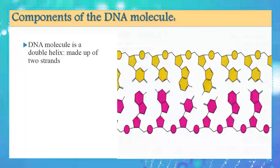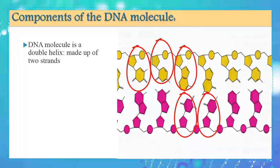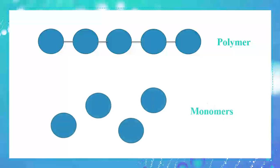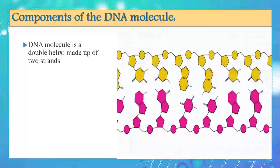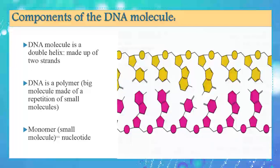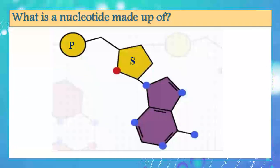Now let's unwind the DNA molecule and straighten the two strands to find the components of each strand. Looking carefully at each strand, you can find a kind of repetition. The repeating structure appears once, twice, and several times. A molecule made up of several repeating units is called a polymer. So DNA is a polymer made up of smaller units called monomers, and we call each monomer a nucleotide.